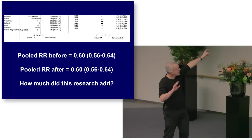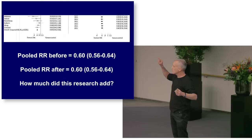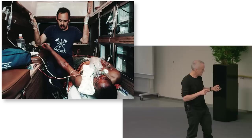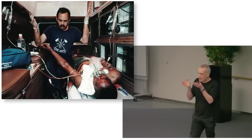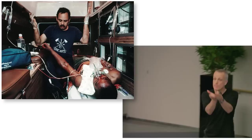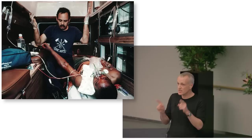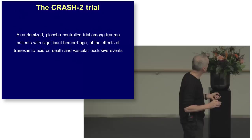There's overwhelming evidence that tranexamic acid stops you bleeding in surgery. So the question is: does it stop you bleeding in trauma? This man's been shot in the stomach and he's bleeding and might bleed to death. Would people have made that generalisation — from tranexamic acid stopping bleeding in surgery to it possibly stopping bleeding in trauma? They hadn't. We looked for randomised controlled trials and there were none.